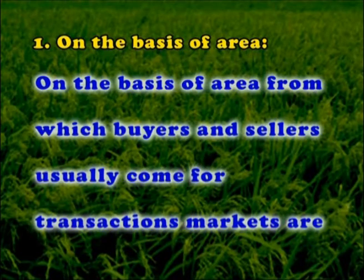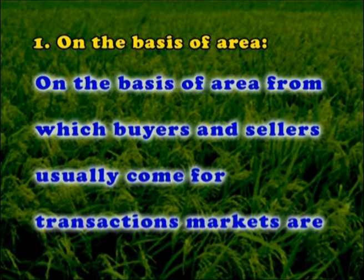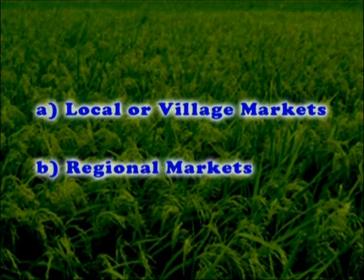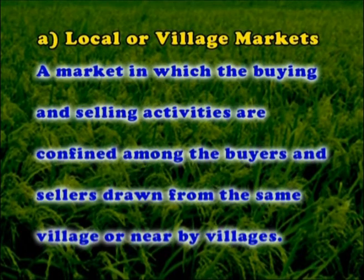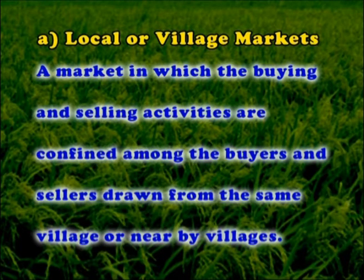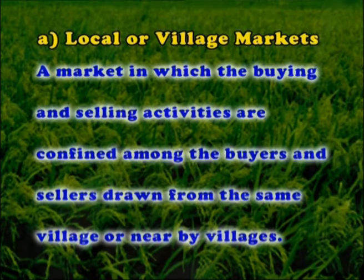Markets may be classified on the basis of dimensions like area, time, commodities, volume, and competition. On the basis of area from which buyers and sellers usually come for a transaction, markets are classified as local or village markets and regional markets. A local market is one in which buying and selling activities are confined among buyers and sellers drawn from the same village or nearby villages. Village markets exist mostly for perishable commodities.